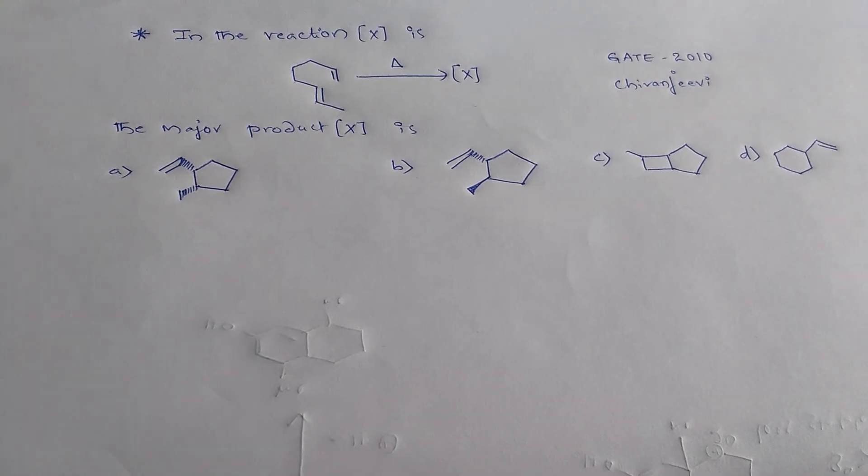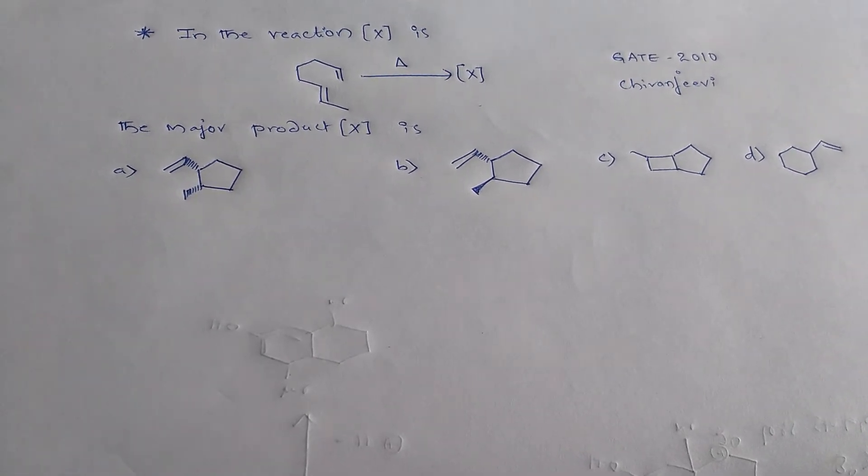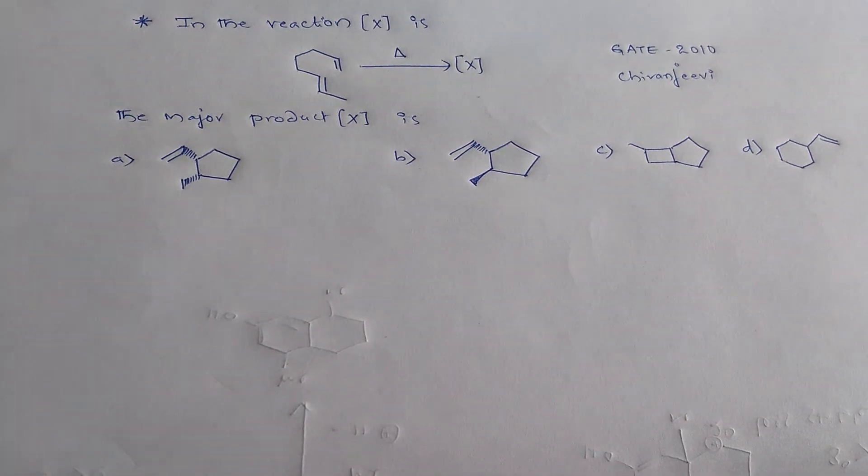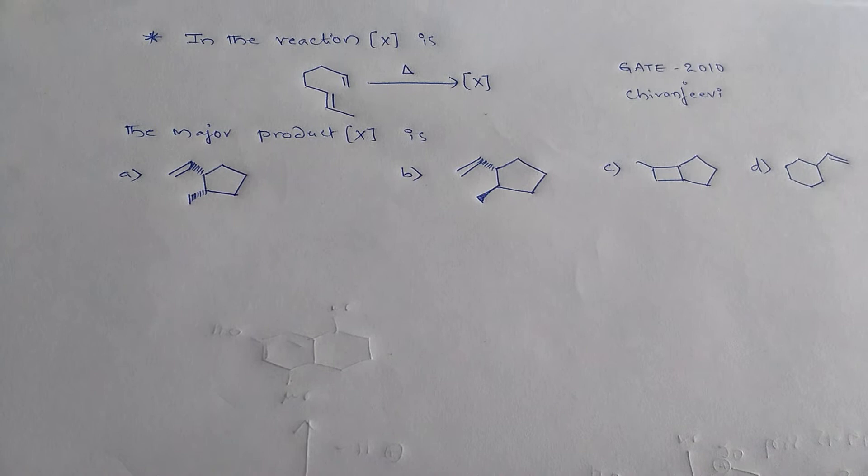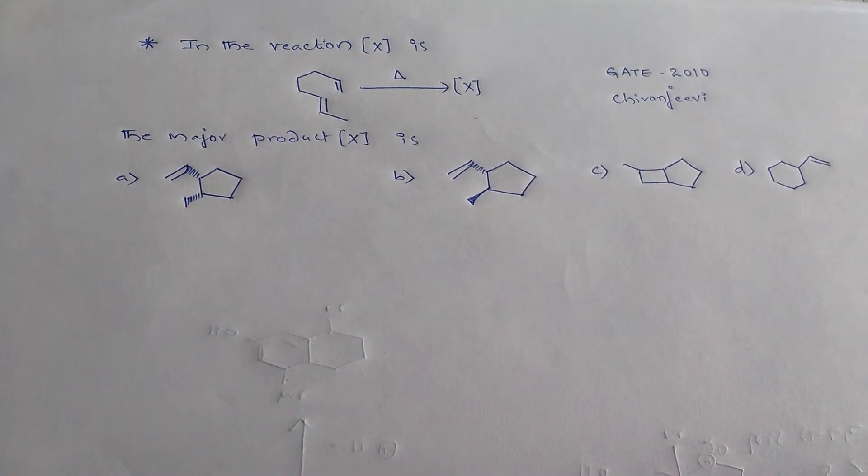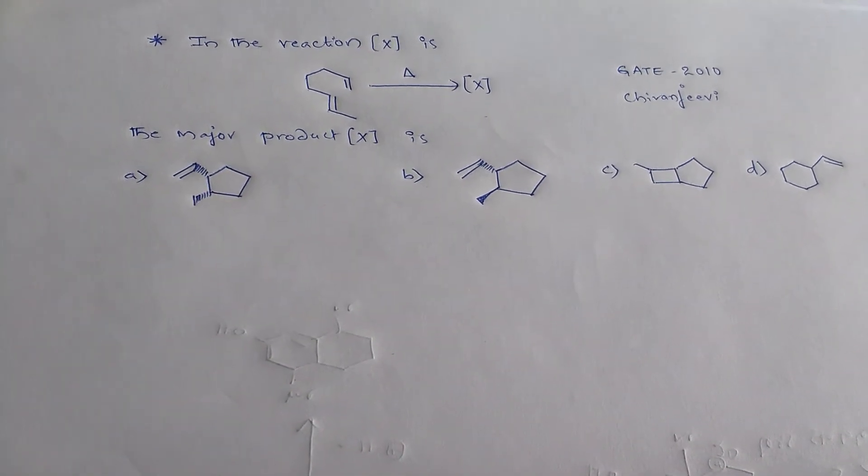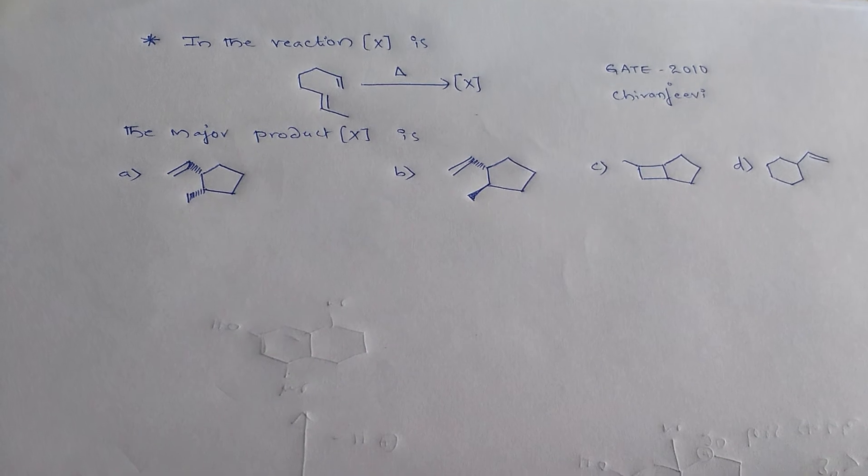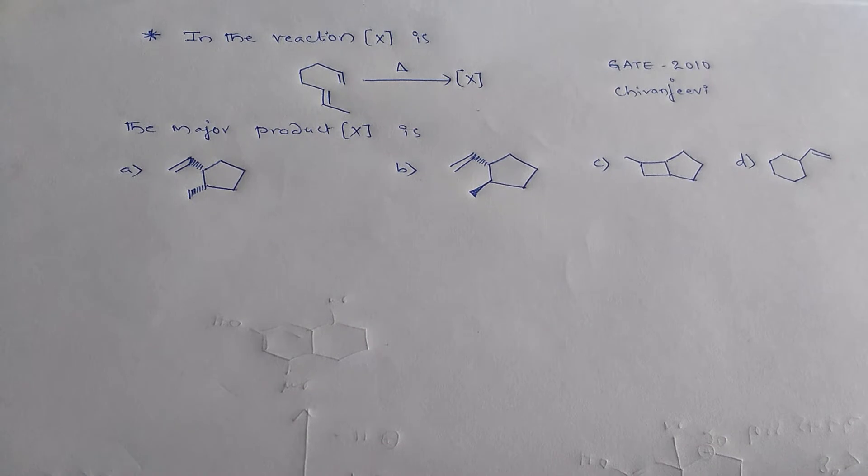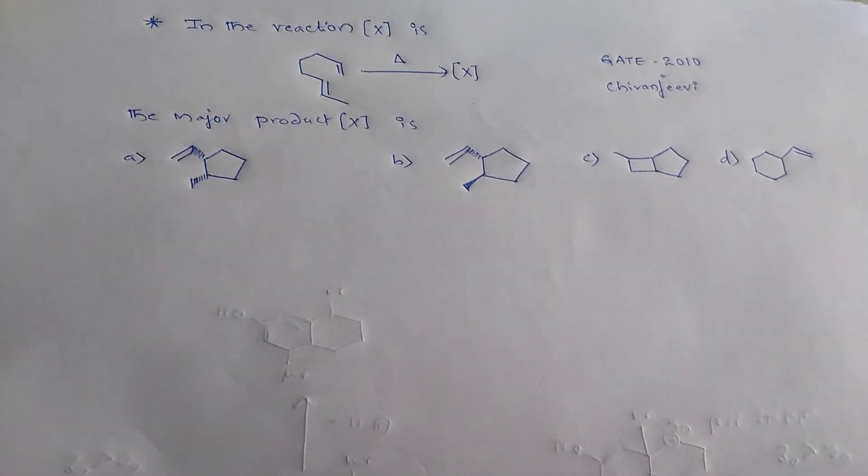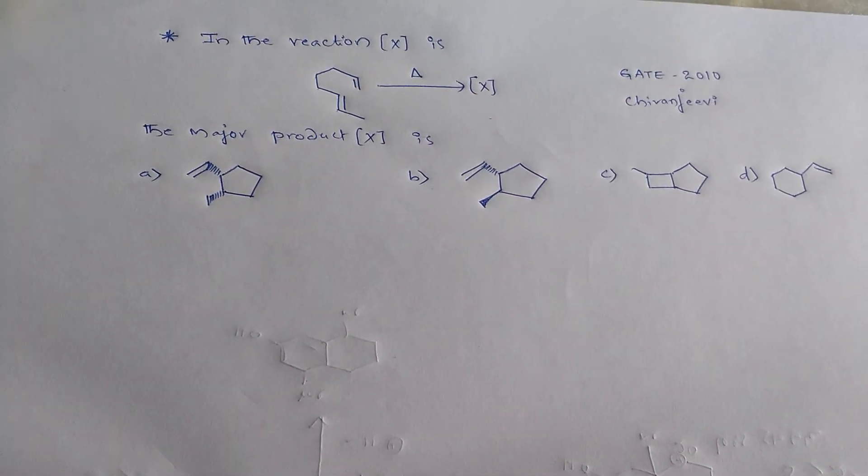The question is: in the reaction, what is the product X? On heating, diene on heating produces X. So X should be A or B or C or D. If you observe this problem...